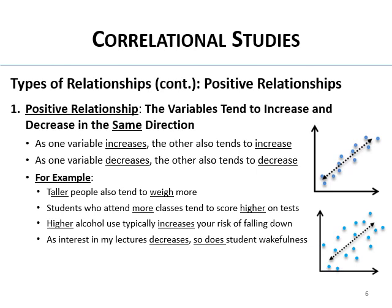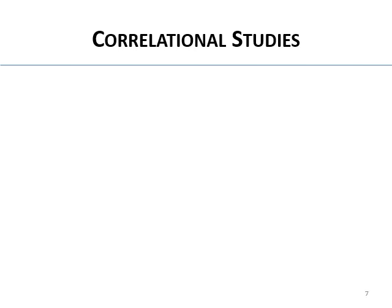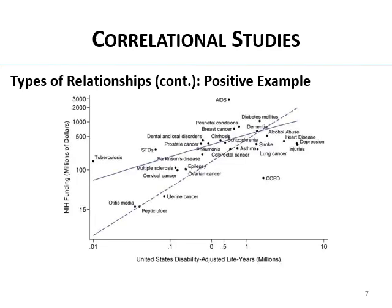Some examples of negative relationships: having less money is associated with fewer leisure activity choices. Couples who are married longer tend to be healthier and happier — actually those are positive relationships. Here's a real-world positive example: a plot of NIH funding in millions of dollars for different disease conditions versus the estimated years of life lost due to those diseases.